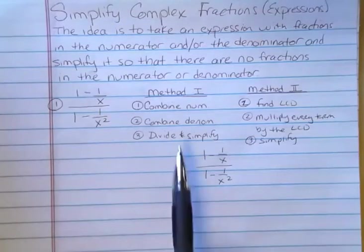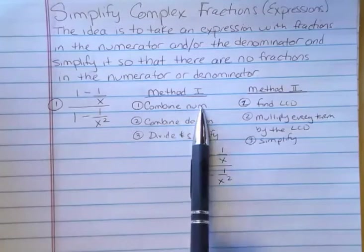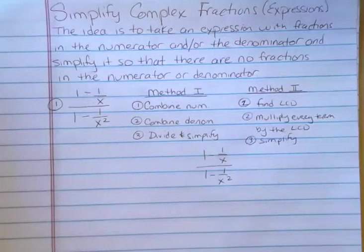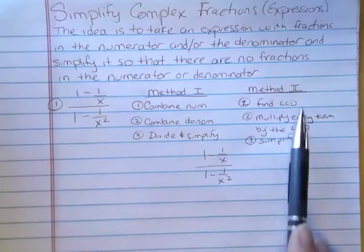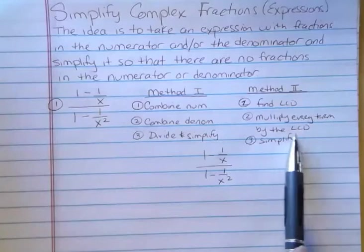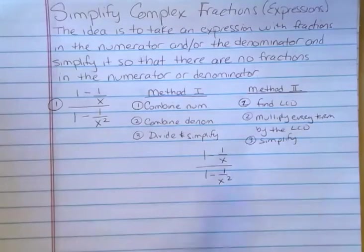In the first method, we combine the numerator, combine the denominator, and then we divide and simplify if necessary. In the second method, we find the least common denominator, multiply every term by the least common denominator, and then simplify the results. I'm going to do this problem in both ways, and then I'll do one using method one and another one using method two.